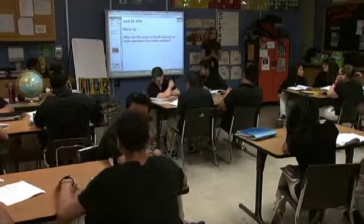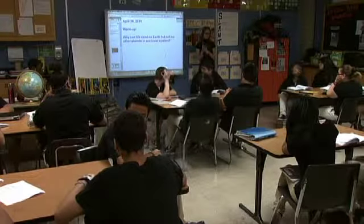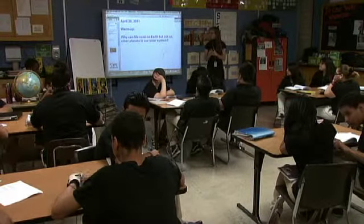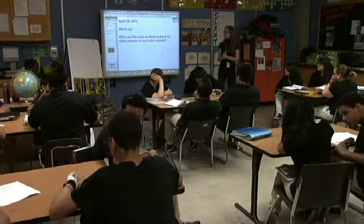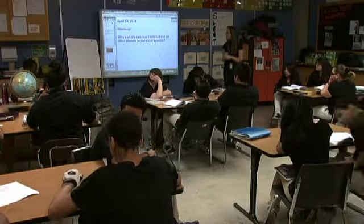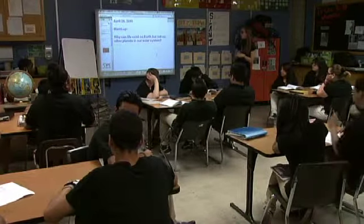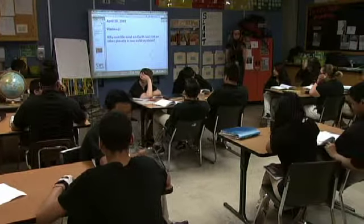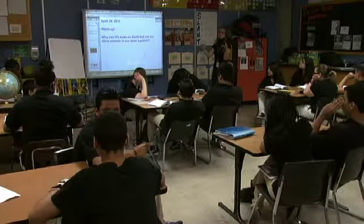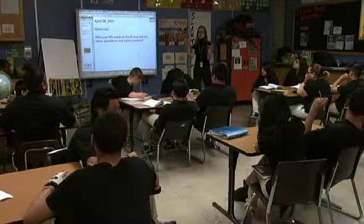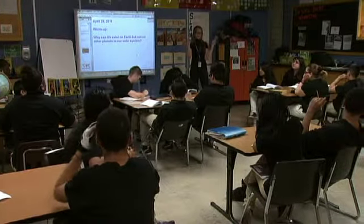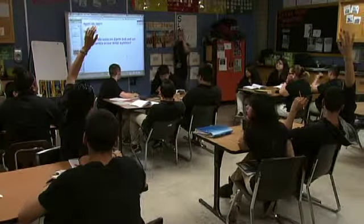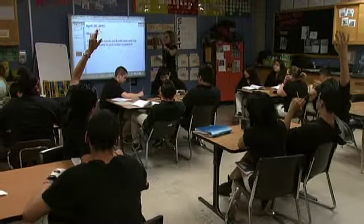Everybody should be SLANTing now. Your time for the warm-up is up. I want you to raise your hand if you've got answers for me. The question is: why can life exist on Earth but not on other planets in our solar system? Remember we're talking only about our solar system, and we're talking about life as we know it — life how it is here on Earth. There are three things. Give me one of them.